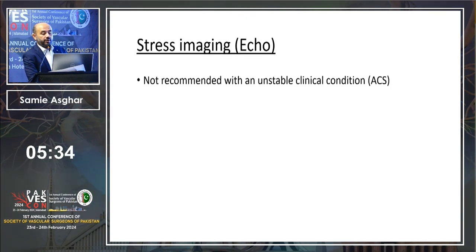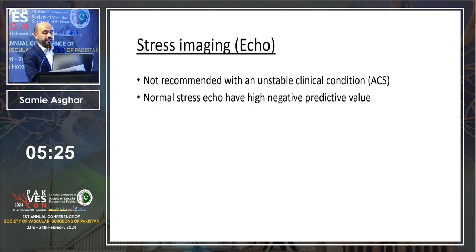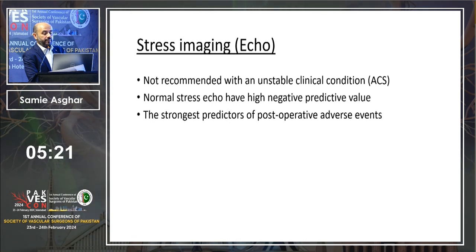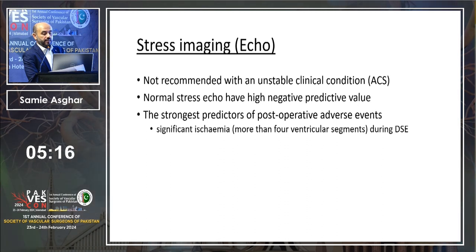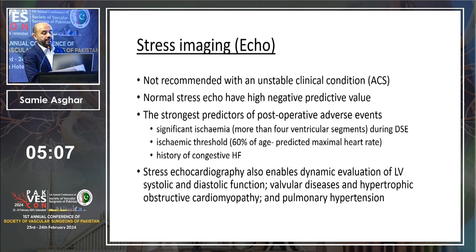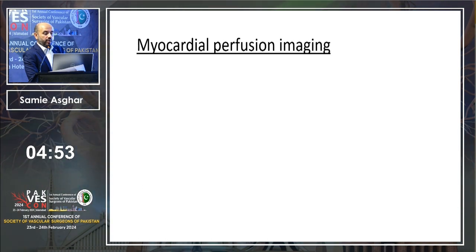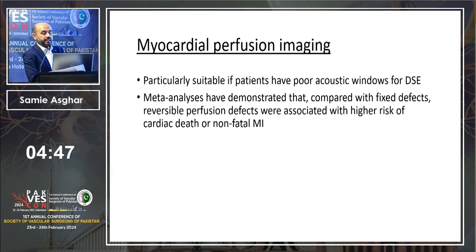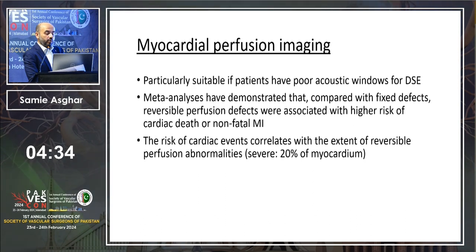Stress echo is not recommended with an unstable clinical condition like ACS. Normal stress echo has a high negative predictive value. The strongest predictors for post-operative adverse events are significant ischemia of more than 4 ventricular segments, ischemia threshold at 60% of age-predicted maximum heart rate, and history of congestive heart failure. Stress echo also provides dynamic evaluation of ventricular function, diastolic function, valvular function, and pulmonary hypertension.